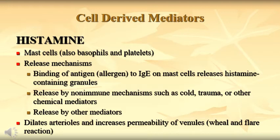Histamine is a preformed chemical mediator found in mast cells, basophils, and platelets. Release occurs when cells have IgE antibody — an immune reaction — or through non-immune mechanisms such as cold, trauma, or any other type of injury. Other mediators can also trigger histamine release. The function of histamine is to dilate arterioles and increase permeability of venules, and it is responsible for the wheal and flare reaction — causing swelling and redness.